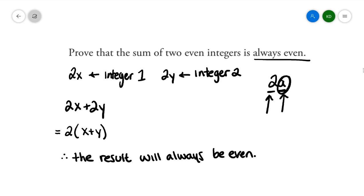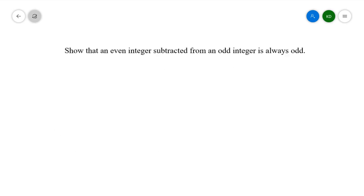Let's try another example. Show that an even integer subtracted from an odd integer is always odd. First, what we want to start with is an odd integer. So let's start with 2x plus 1.